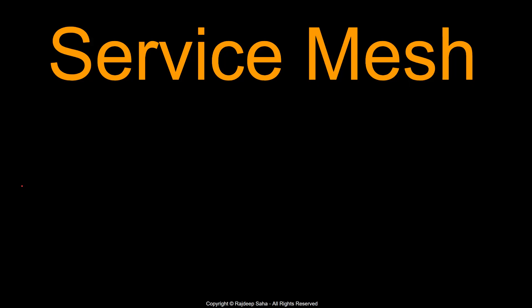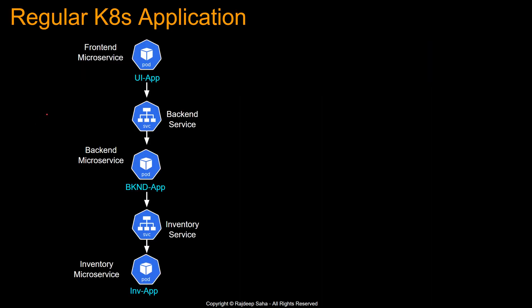Welcome back. In this lecture, we are going to learn about service mesh. Let's take a look at a regular Kubernetes application — a multi-tier application. You will generally have a front-end microservice, basically a UI application running in a pod, then a backend service, and behind that a backend microservice running a backend application. That backend application might reach out to other microservices — maybe to check inventory — running in their own pods.